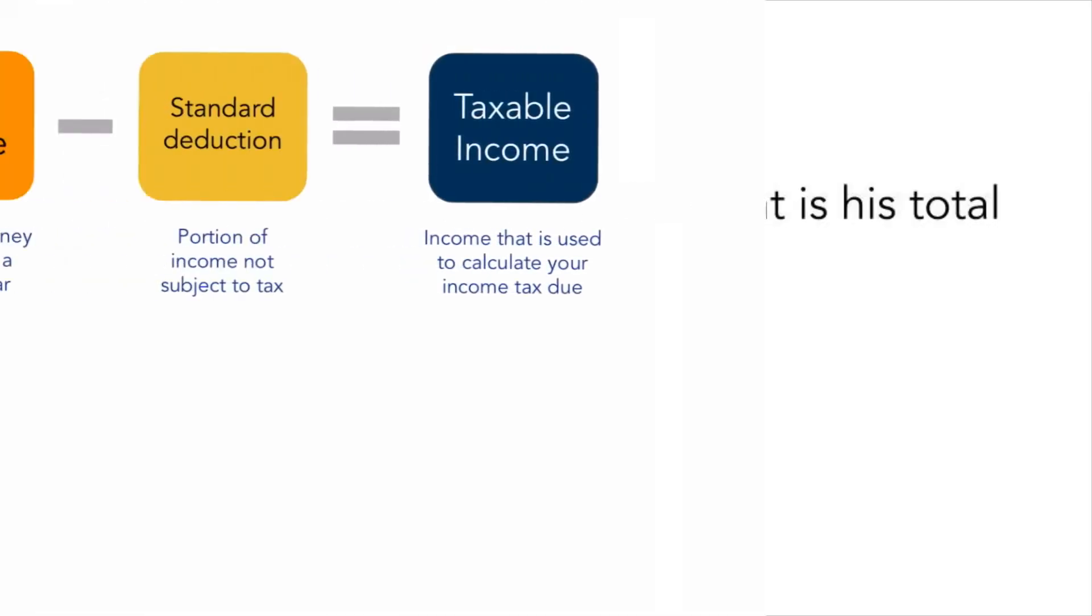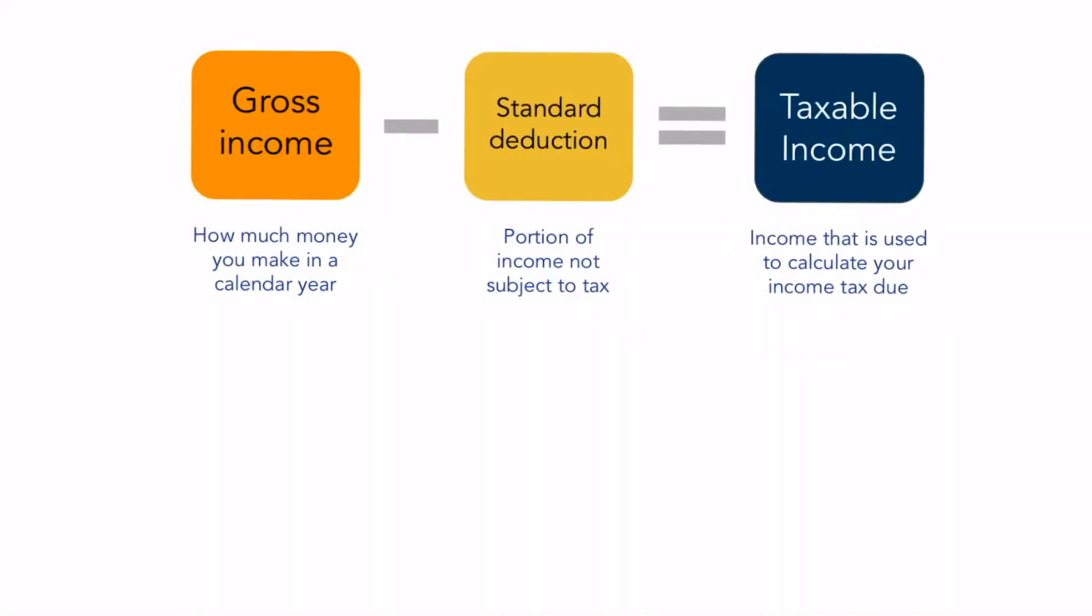First, we need to determine Mario's taxable income. We can take his gross income, $80,000, and subtract the standard deduction for 2019, $12,200. This means that his taxable income is $67,800.